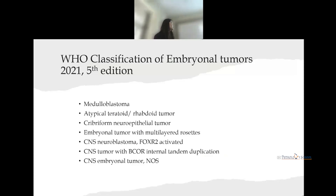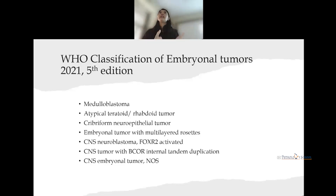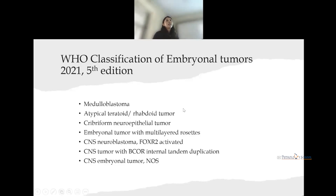We managed to get a sneak peek at the 2021 WHO fifth edition classification. Most tumors now have a more molecular approach. Medulloblastoma remains the same; atypical teratoid raptoid tumor will now include cribriform neuroepithelial tumor — which does not show raptoid features but shares SMARCB1 loss, hence the category has been improved.